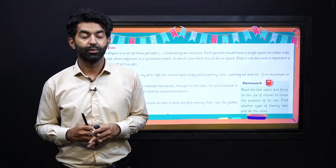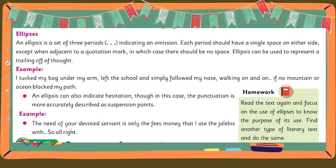Let us find out how ellipses work. You can open your book and find the main lesson about ellipses. An ellipsis — plural: ellipses — is a set of three periods, represented by three dots or full stops, indicating an omission. It means something is left out, something is not said, or something is omitted from the sentence. Each period should have a single space on either side, except when adjacent to a quotation mark, in which case there should be no space. This is the correct way of drafting and using ellipses.